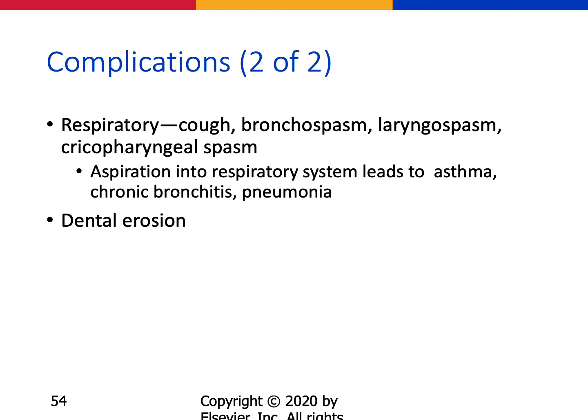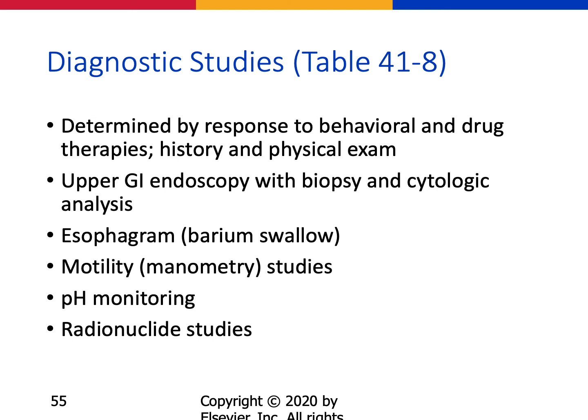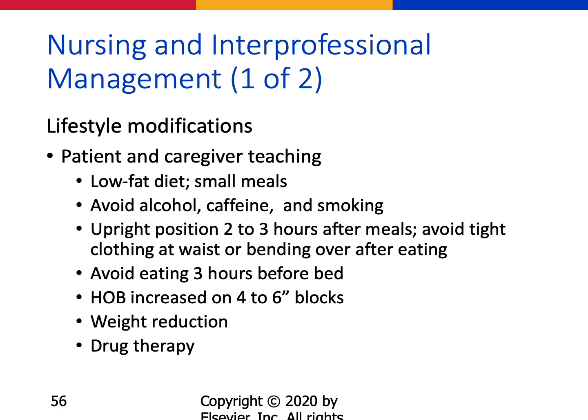Over time GERD can turn into Barrett's esophagus, where cells exposed to stomach acid for prolonged periods can become cancerous. Aspiration pneumonia can also result from excessive regurgitation. Dental erosion is another complication, as tooth enamel cannot withstand stomach acid. If GERD is suspected, diagnostic studies are on table 41.8; options include an upper GI esophagram or barium swallow.